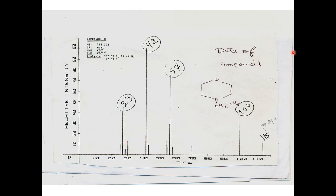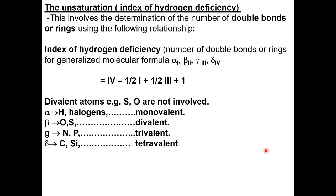If we obtain the exact molecular weight and have the empirical formula, we can derive the molecular formula. After determining the exact formula, we can derive the unsaturation — the number of rings or double bonds — using this equation: the number of tetravalent atoms (carbon) minus half the number of monovalent atoms (hydrogen), plus half the number of trivalent nitrogen atoms, plus one, gives the index of hydrogen deficiency (unsaturation).